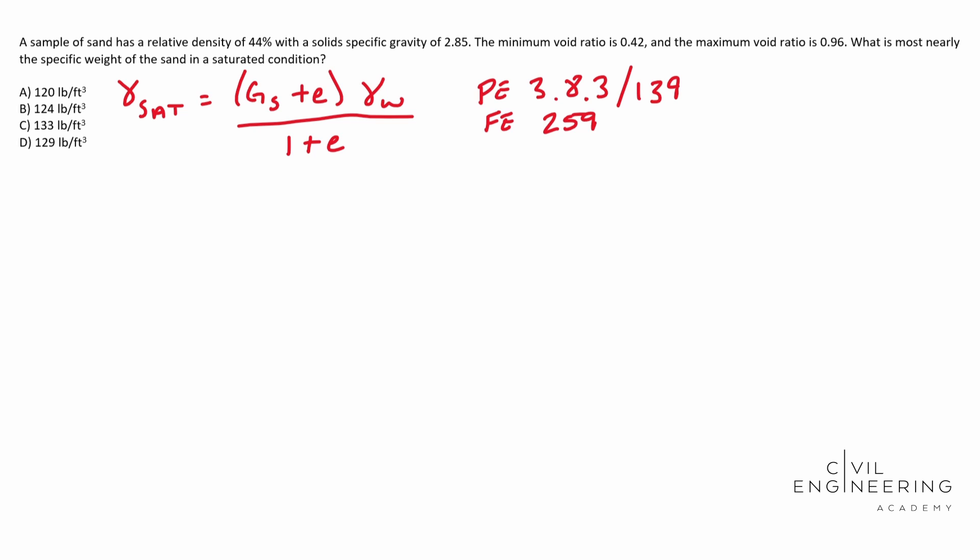And when you do that, we're going to go ahead and write the equation down. It's DR is equal to e max minus E over our e max minus our e min.